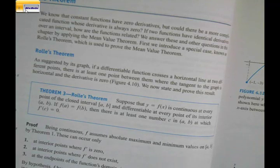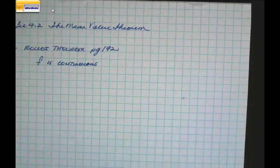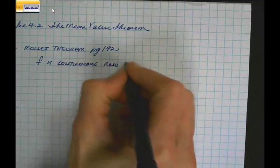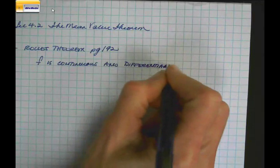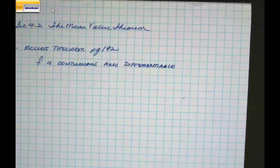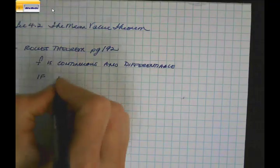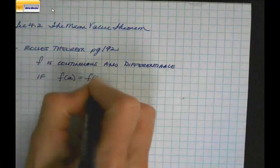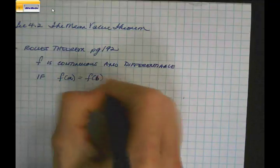So you have this continuous and differentiable function. Your f is continuous — meaning no breaks, no vertical asymptotes — and differentiable, meaning no cusps. Then it says: if f of a equals f of b, these are y values, the function values, the vertical heights of the graph.